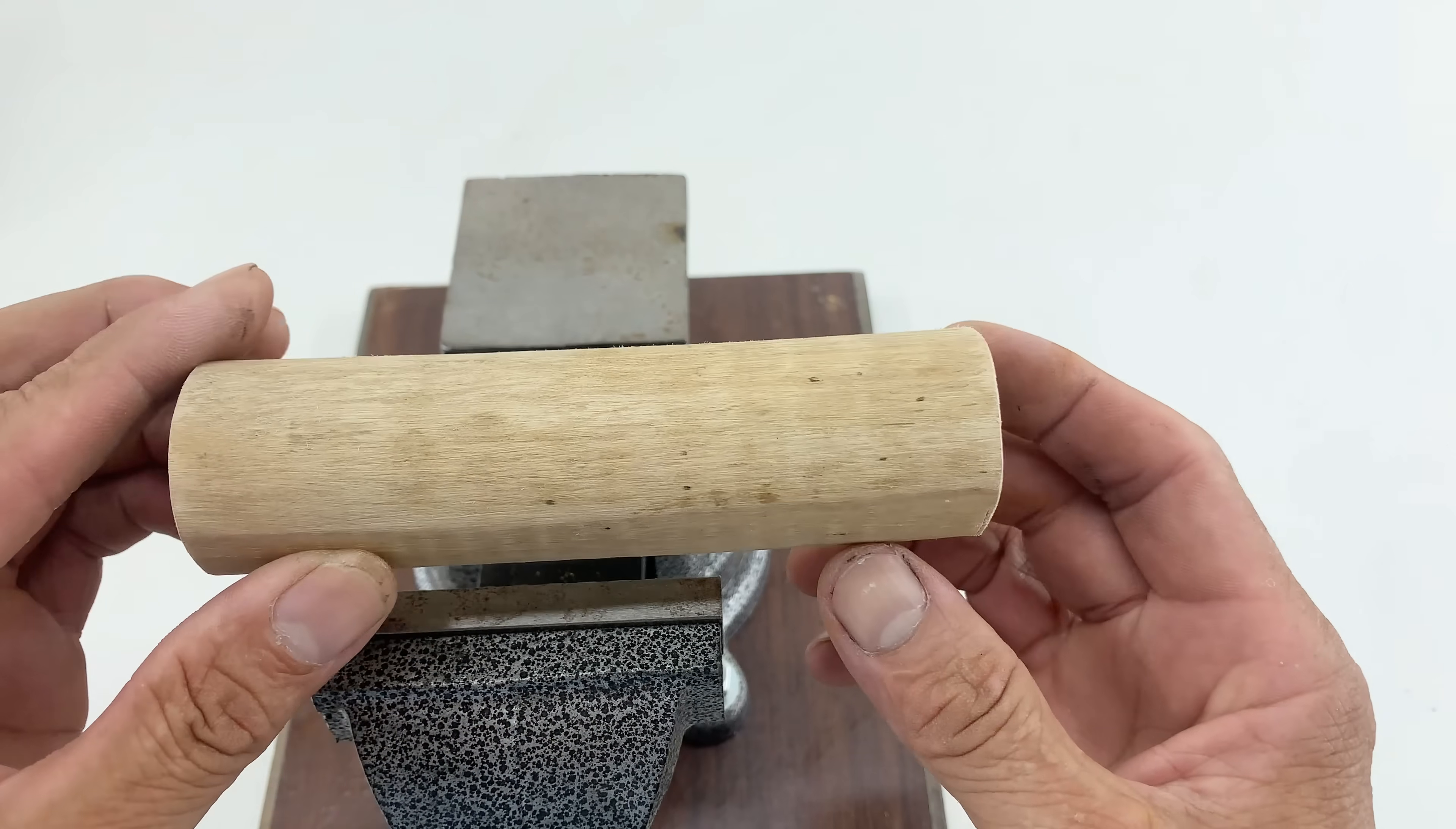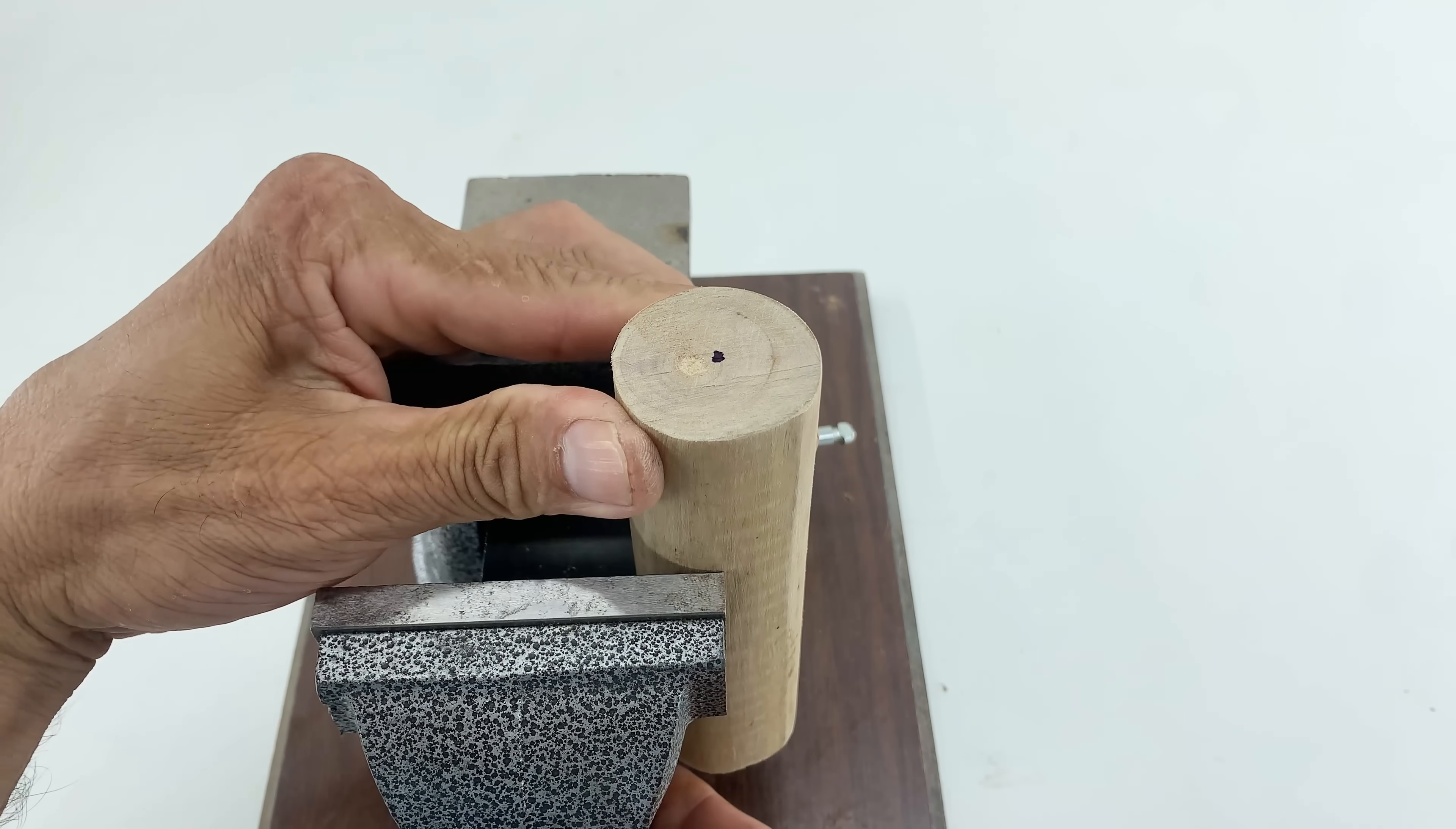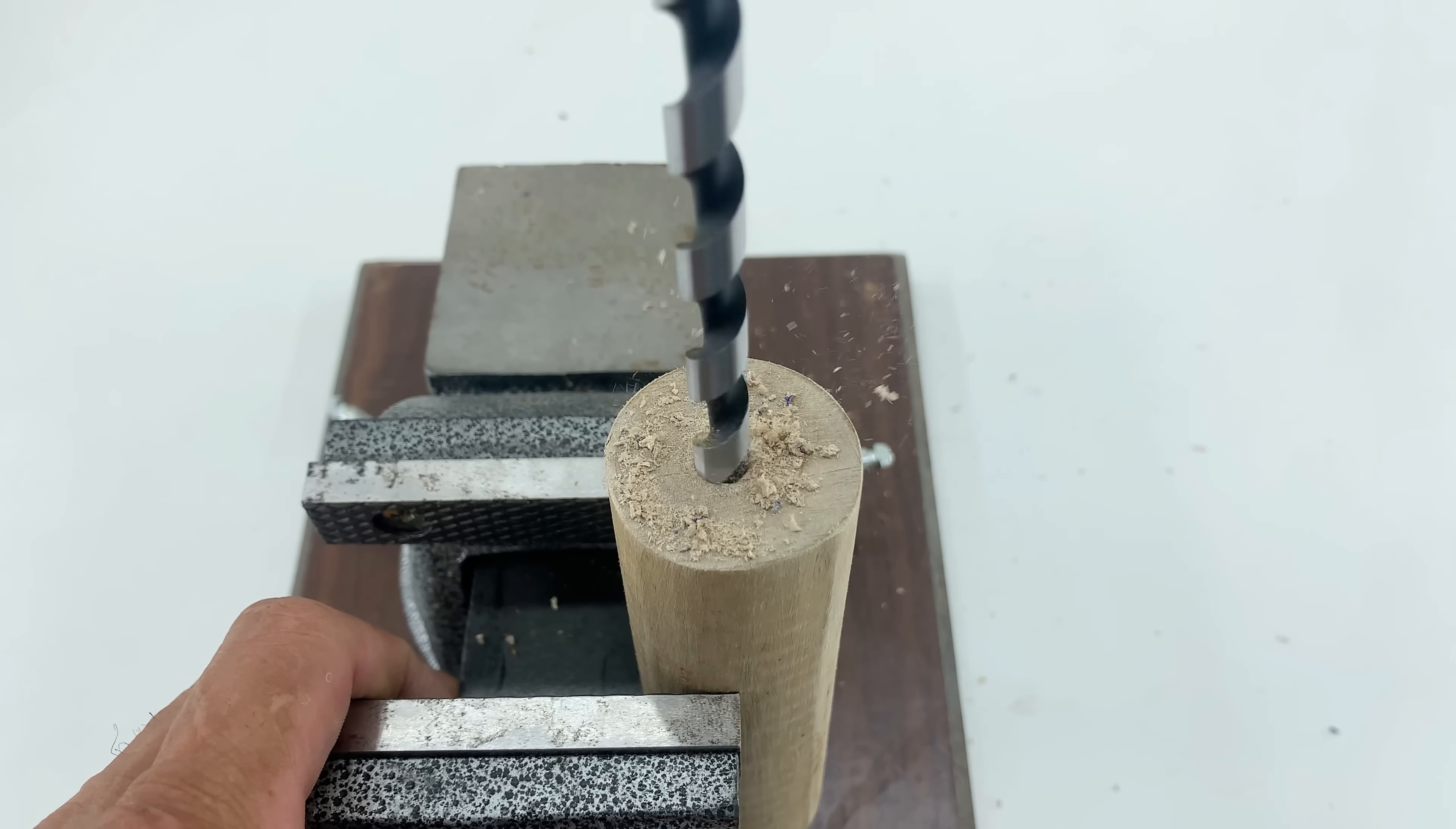Now, for the handle, I'm using a simple wooden dowel. I mark the center on one end with a marker. This helps guide my drill bit. With the dowel secured in a vise, I utilize a power drill with an appropriate drill bit to bore a primary hole into the wooden dowel. Consistent pressure and speed are maintained to ensure a straight and clean bore.